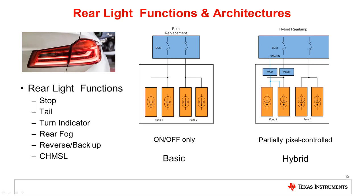In a classical basic rear lamp system, each light function gets powered by the body control module from a dedicated high side switch, and diagnostics are implemented in the high side switches in the BCM. If more features are needed, like a sequential turn light, a higher resolution solution can be used where part of the system integrates a microcontroller. The microcontroller is used to implement animation and diagnostic functions, and for communication between the BCM and the rear lamp.